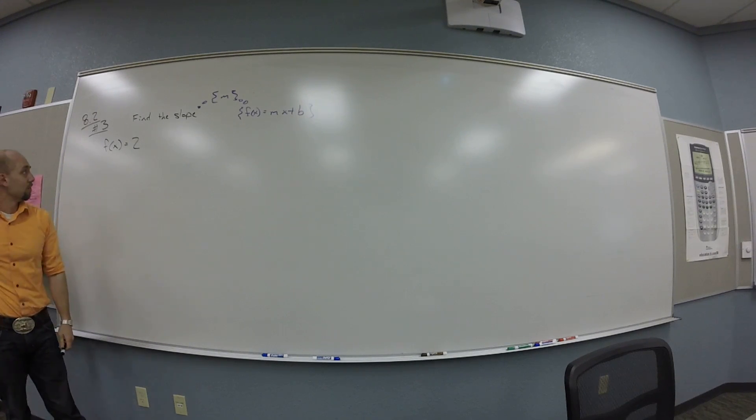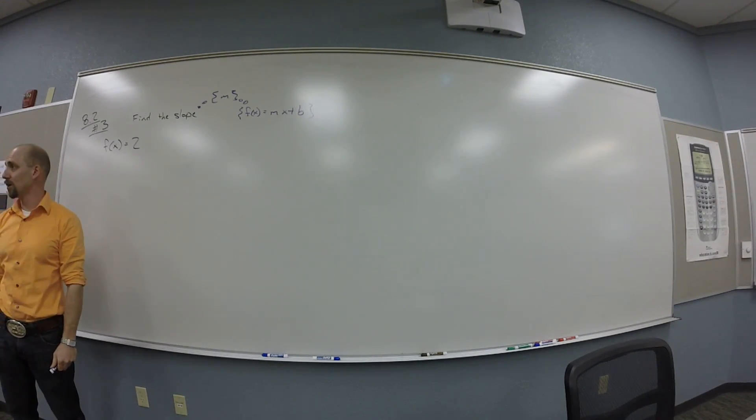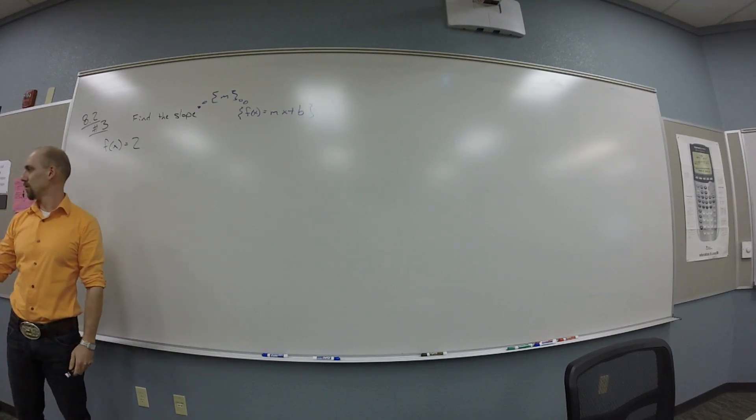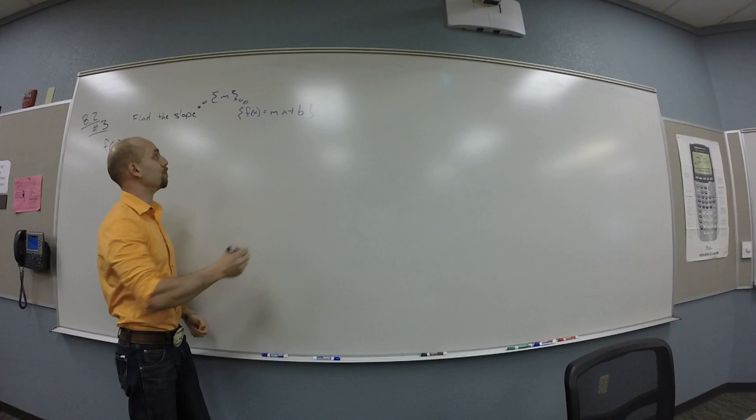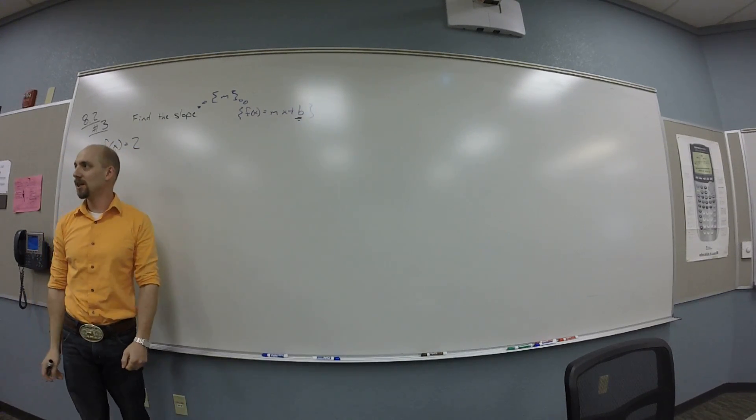Okay. So when you see f of x is 2, you might think to yourself, ah, 2 has to be the slope, right? What's the problem? Yeah, 2 is the B, right? You guys see that?